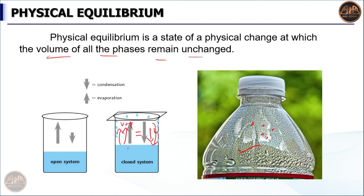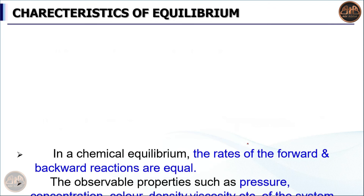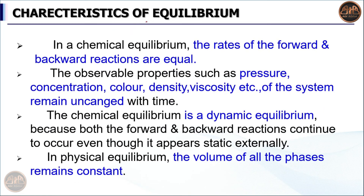This is the physical equilibrium state. Now let's look at the characteristics of equilibrium. First, in chemical equilibrium, the rate of the forward reaction is equal to the rate of the backward reaction. Second, the observable properties such as pressure, concentration, color, density, and viscosity of the system remain unchanged with time.